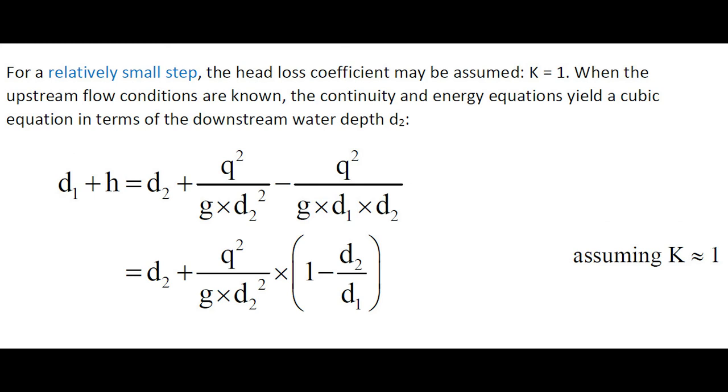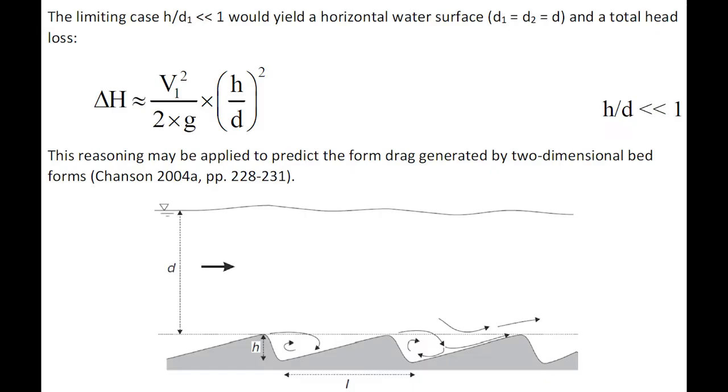For a relatively small step, when k equals 1, the continuity and energy equation gives a cubic equation in terms of the downstream water depth, when the upstream flow conditions are known.